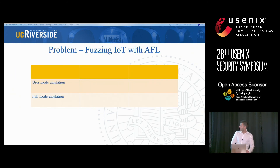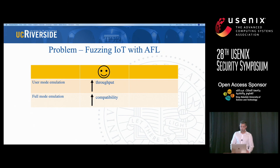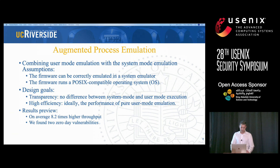So far, for fuzzing IoT with AFL, we have two options: either user mode emulation or full mode emulation. With user mode emulation, we have high throughput but low compatibility. With full mode emulation, we have high compatibility but low throughput. How about combining them? That's actually the idea behind our augmented process emulation — combining user mode emulation with system mode emulation. Our design goal is high transparency, meaning we don't want any difference in execution between the two modes, plus high efficiency and throughput with no overhead, or performance as close as possible to user mode emulation.